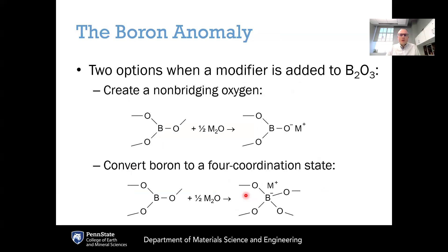The interesting thing with borate glasses is that when modifiers like sodium oxide or other alkali or alkaline earth oxides are added to B2O3 glass, the modifier can take on two different structural roles, which can change the properties of the glass in opposite directions. When modifiers are first added to borate glasses, they can cause boron — much like alumina — to change coordination from three-fold to four-fold because the modifier brings an additional one-plus charge, creating an effective four-plus charge on the boron.